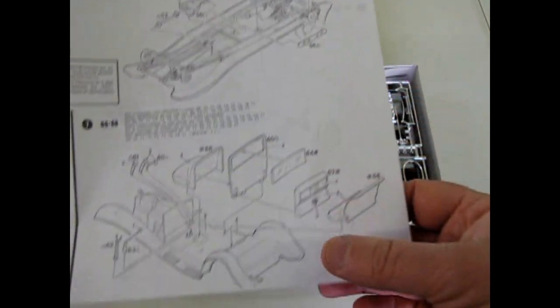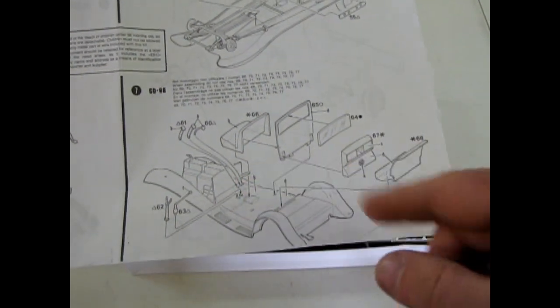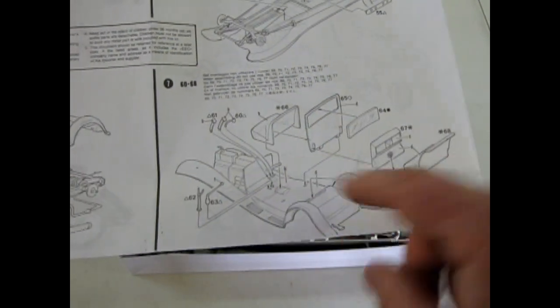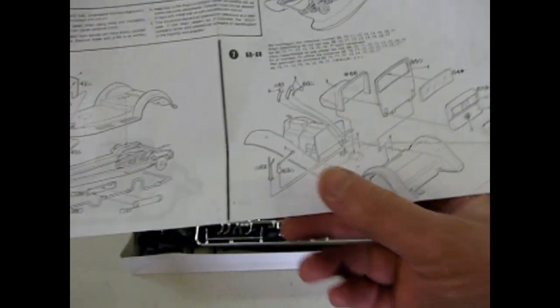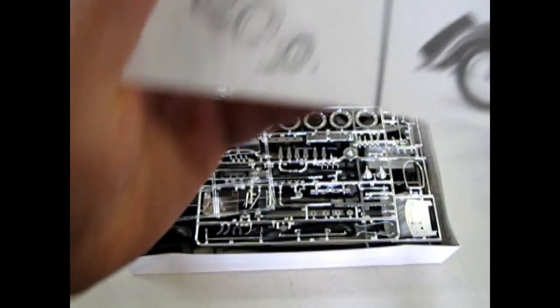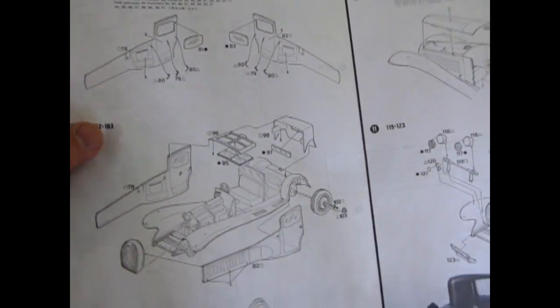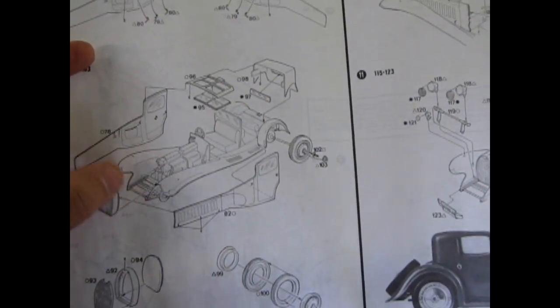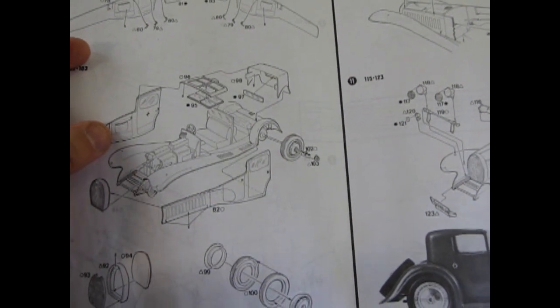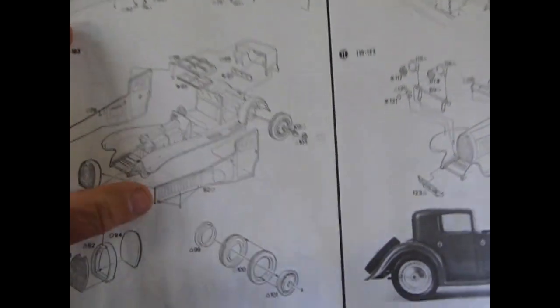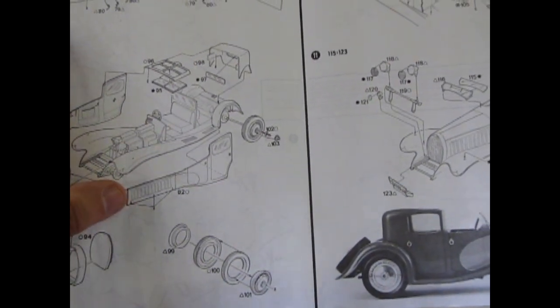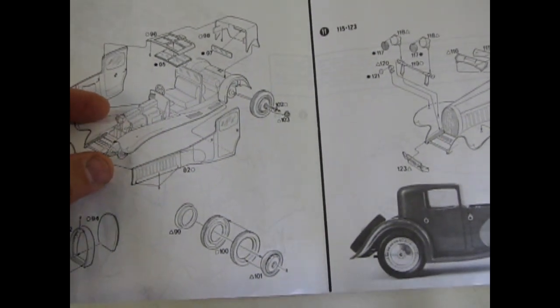And there is the frame and the fenders going on. As well as here, and our interior. And the little partition wall separating the chauffeur from the passenger. Which was a popular body style back then. There's our body panels going together.